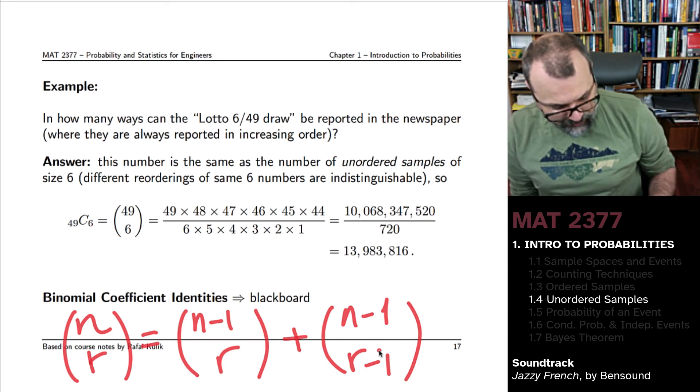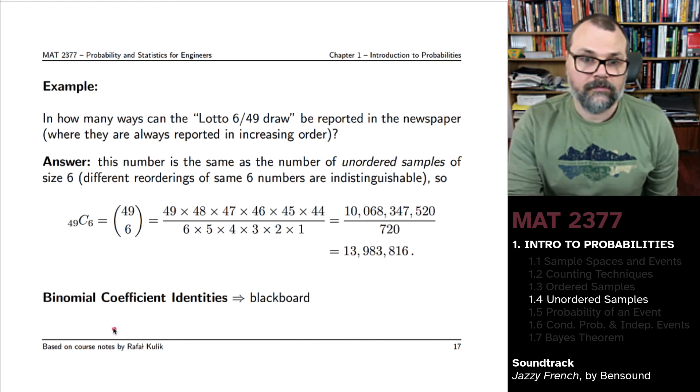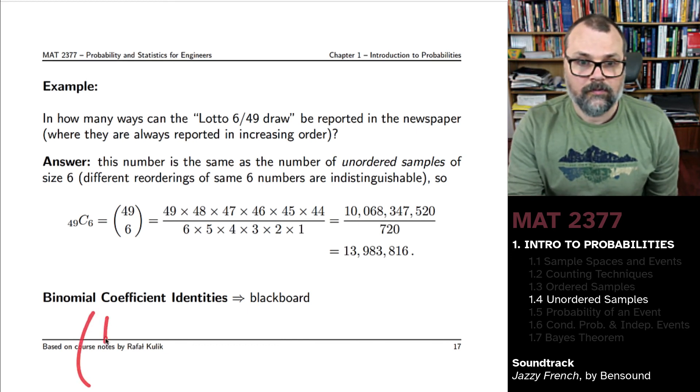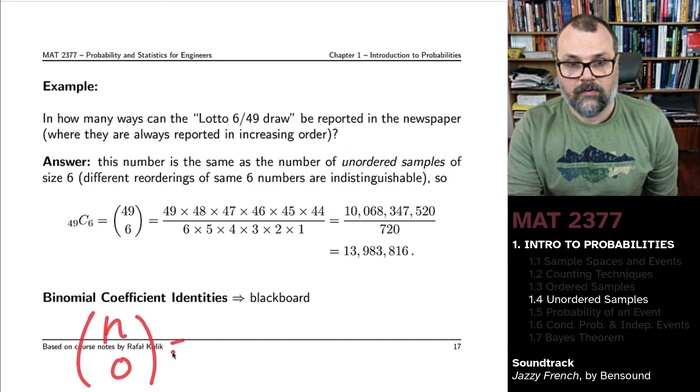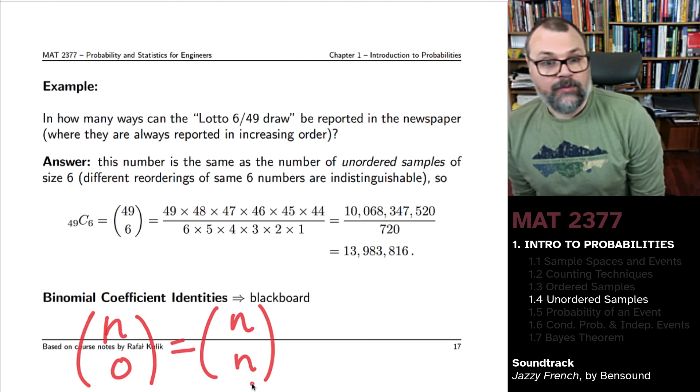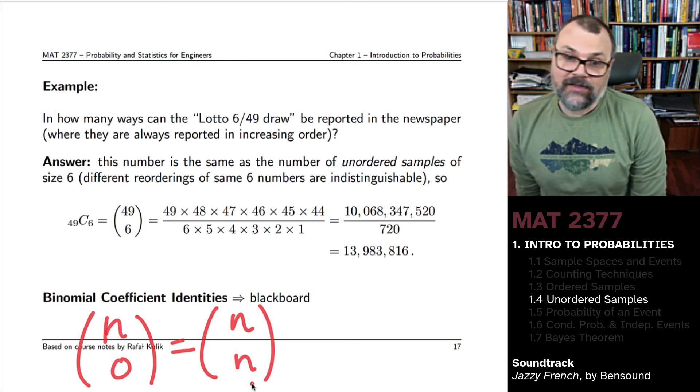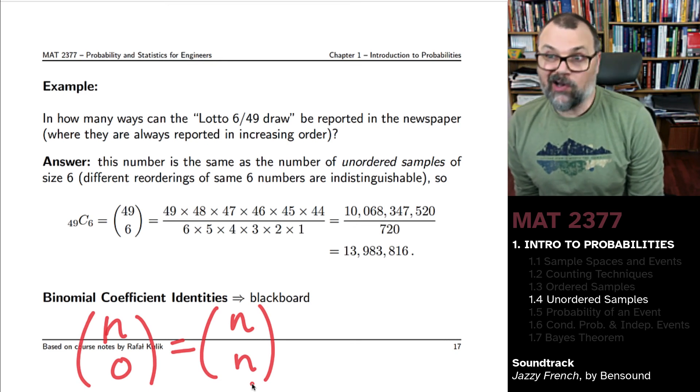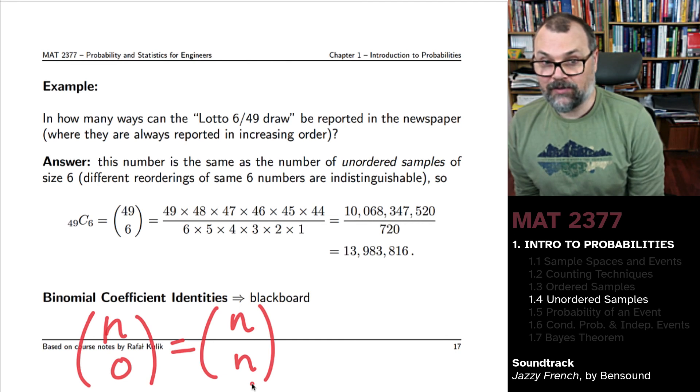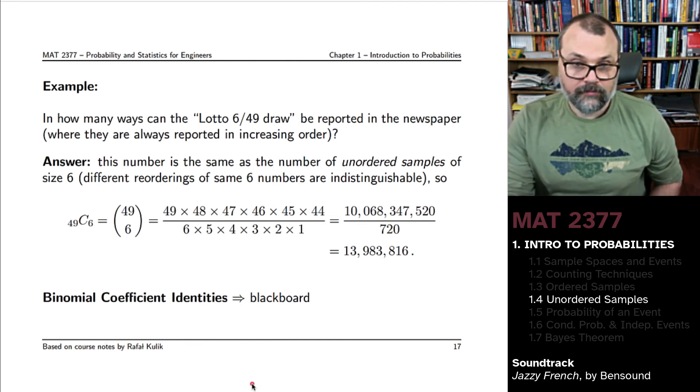For instance, how many ways are there to choose no items from a bag of n items? There's only one way to do so. And that's the same as the number of ways to pick all of the items from a bag of items. Similarly, you'll see the number of ways to pick one item from a bag of n items.